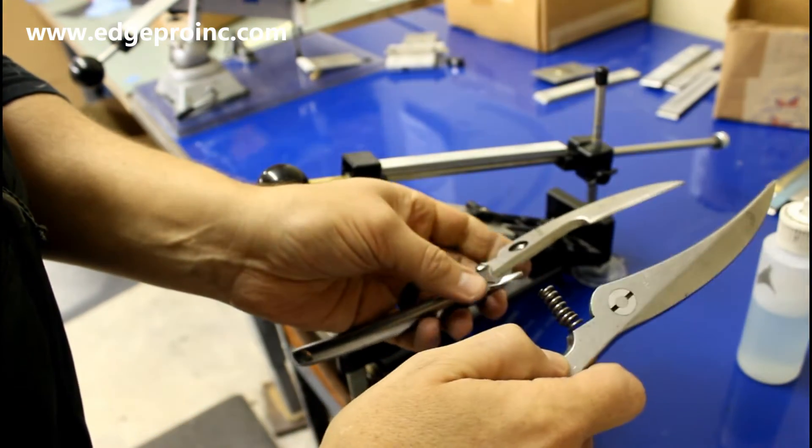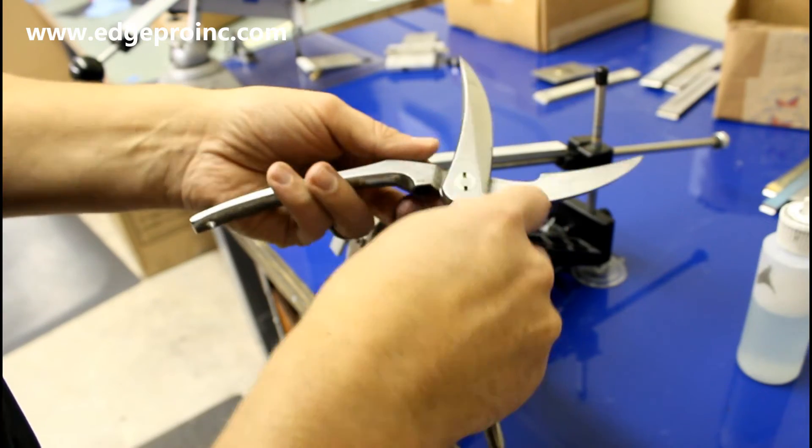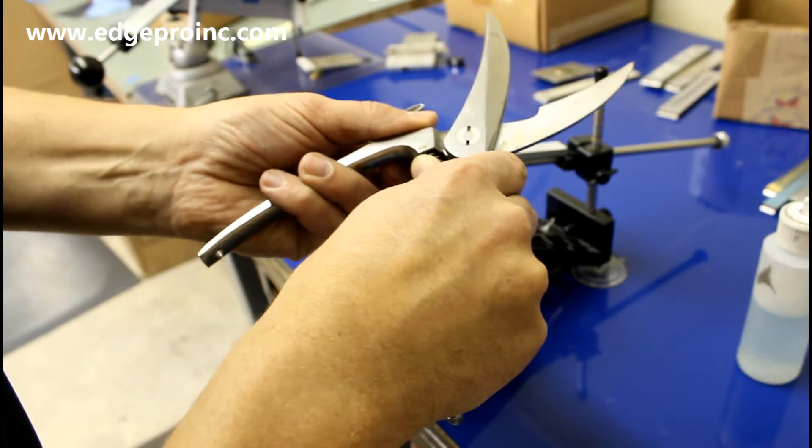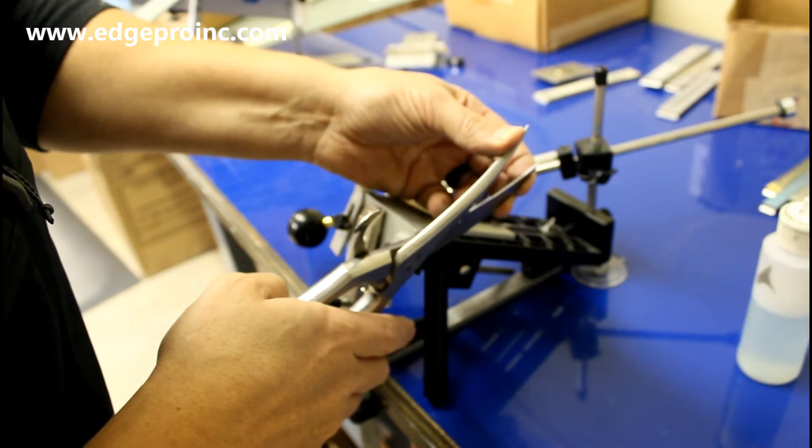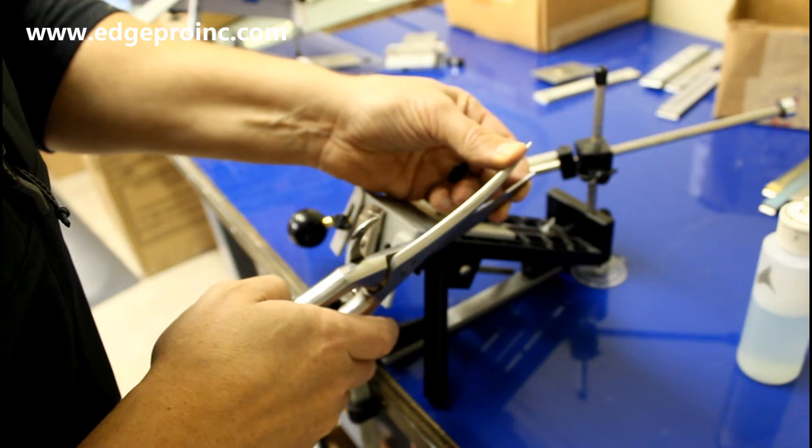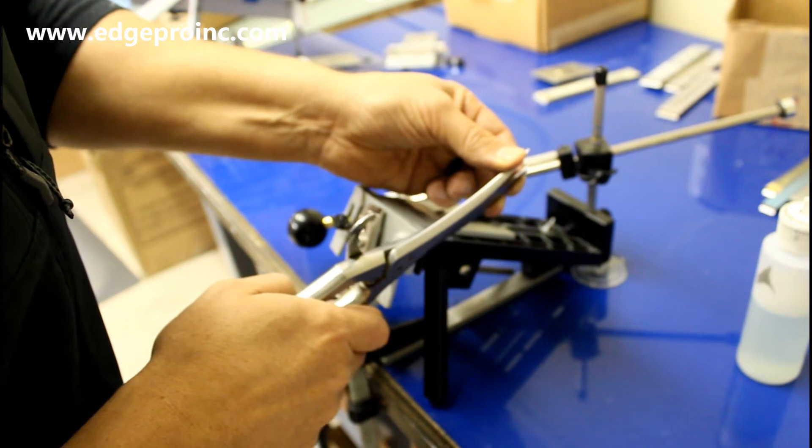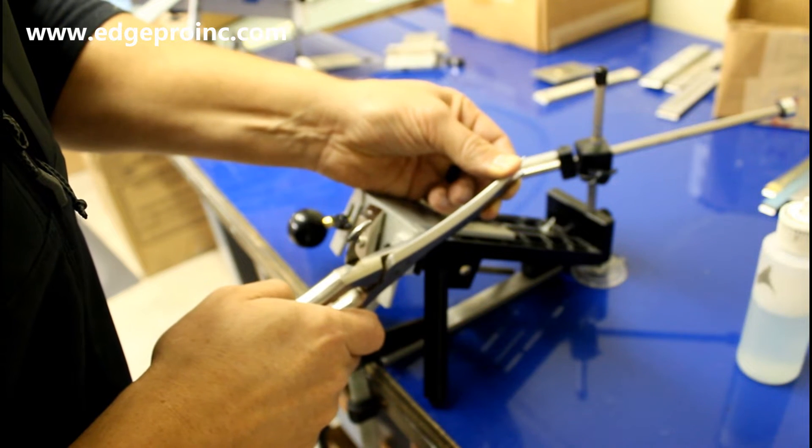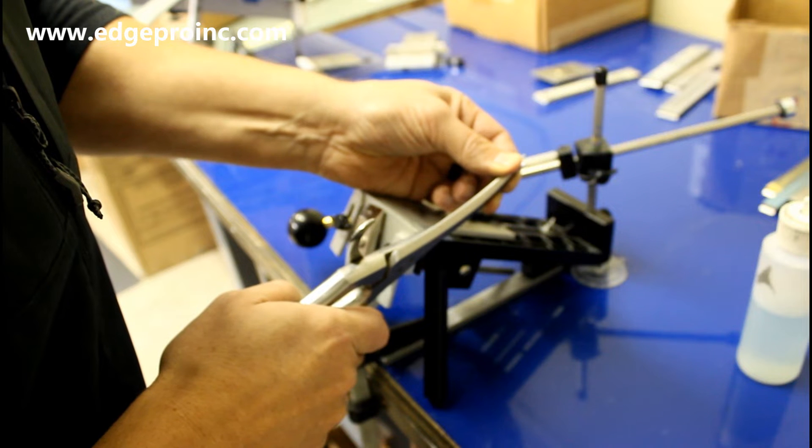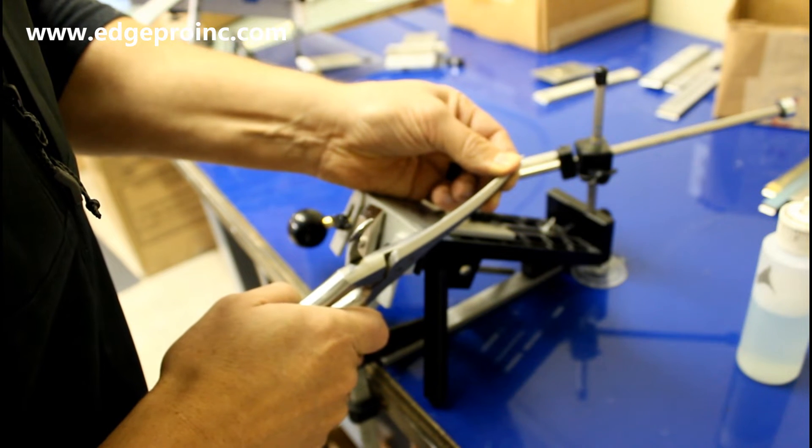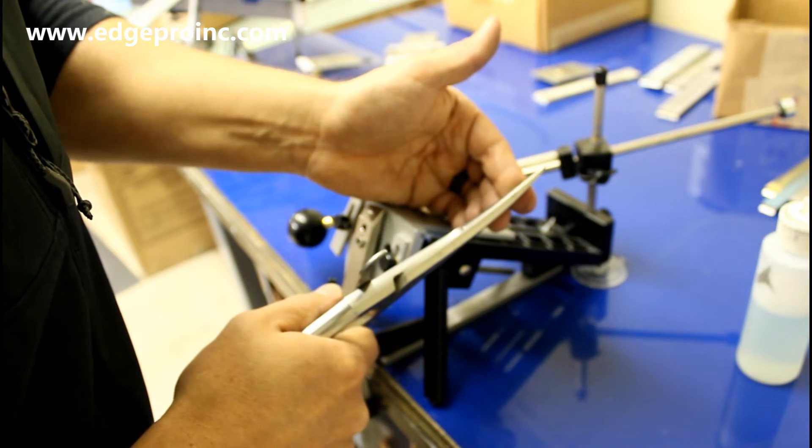So the next step is just going to be to put these things back together. I'm going to just separate the blades, kind of push them apart as I close them the first time, which is kind of hard to do because these are some pretty thick pieces of steel.